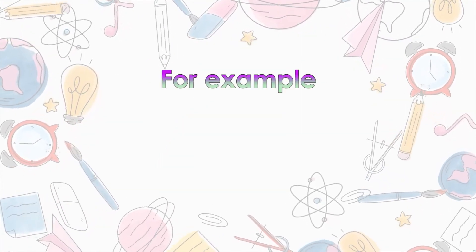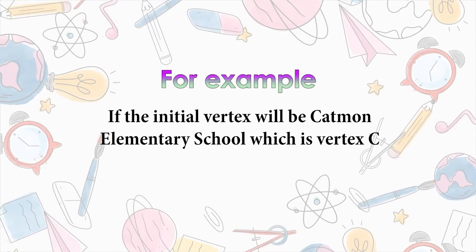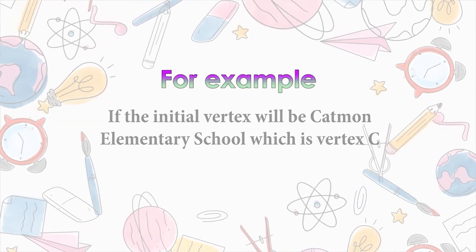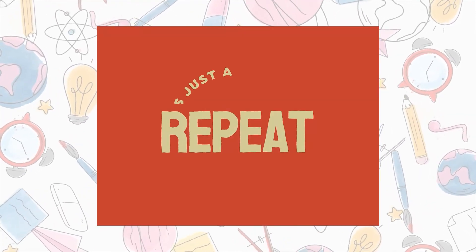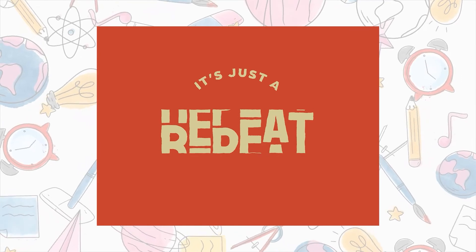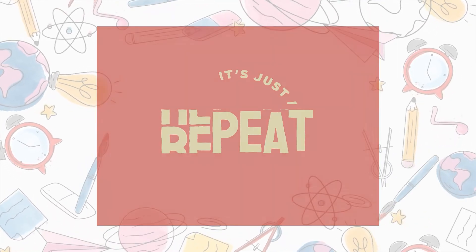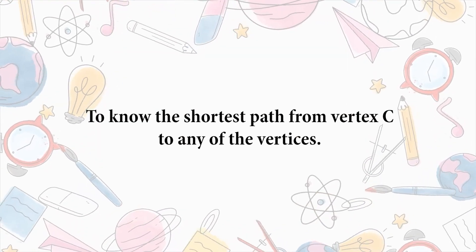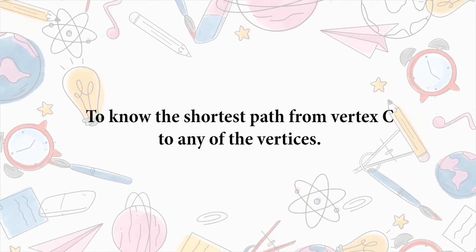For example, if the initial vertex will be Katmon Elementary School, which is vertex C, we will need to repeat again the steps of the Dijkstra's algorithm to know the shortest path from vertex C to any of the vertices.